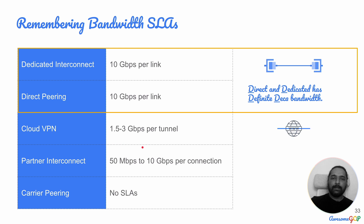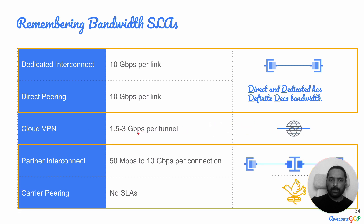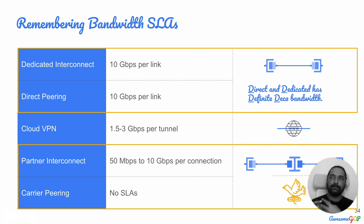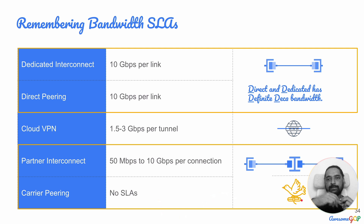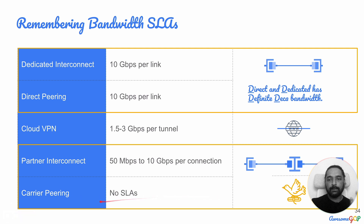Partner interconnect goes via a partner who has an established connection with Google Cloud, typically with a contract, so you get a defined SLA — ranging from 50 Mbps to 10 Gbps depending on the partner. Carrier peering provides no SLAs from Google's side. A mnemonic for this: think of a carrier pigeon — it cannot offer you a service level agreement. It can't say 'I'll get there in a certain time.' So there are no SLAs for carrier peering, but your telecom carrier may offer their own SLA.